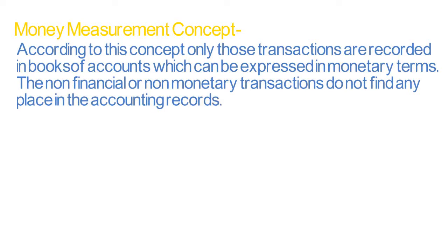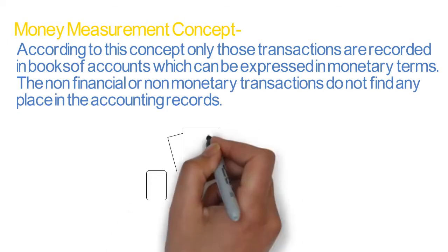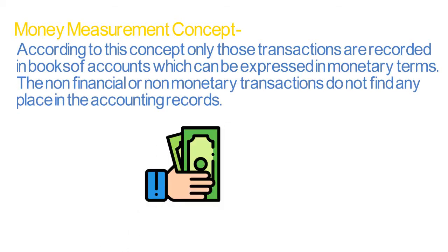This means we will record only those transactions which can be measured in terms of money. In accounts, we won't record those transactions which cannot be measured in terms of money. If any goods are purchased or sold, that is done in monetary terms. You measure it in terms of money. So, in accounts, we can also say that money is a measuring unit.